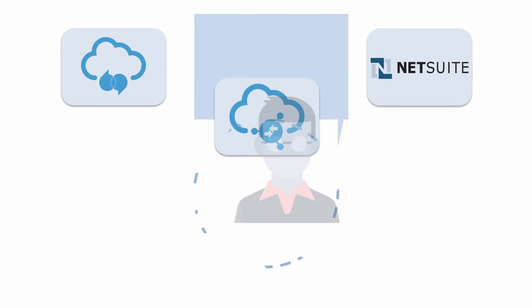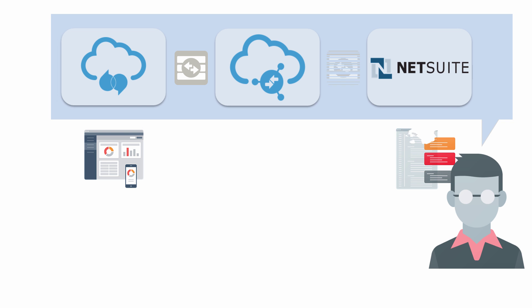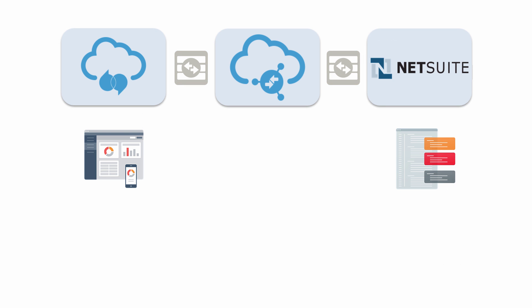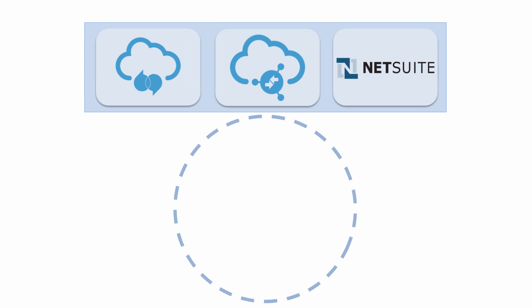Bob needs to synchronize account creation so that every time an organization is created in Oracle RightNow, an account also gets created in NetSuite. To complete this integration, Bob completes several tasks in ICS.